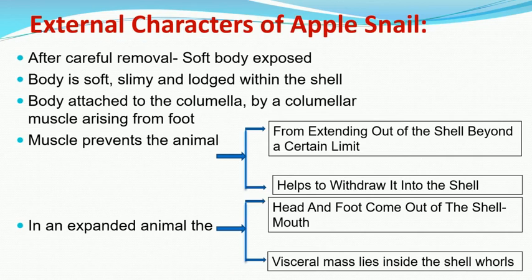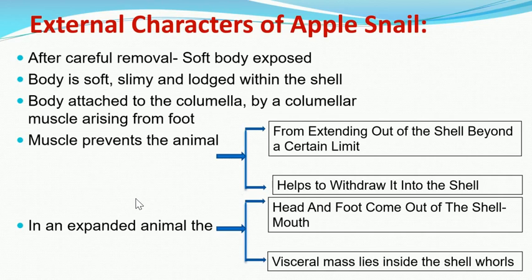Now we move to the external characters of Pila or the apple snail. When the shell of the Pila snail is carefully removed and the body is exposed, the body is differentiated into three parts: head, foot, and visceral mass. The head and foot protrude from the shell for creeping purposes, but the visceral mass always remains within the shell.